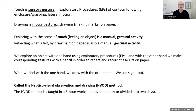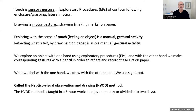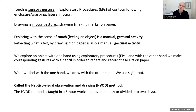In essence, touch is a sensory gesture using the exploratory procedures. Drawing is a motor gesture — making marks on paper. We explore with the sense of touch; we feel the object — a manual gestural activity. We reflect what is felt by drawing it on paper — also a manual gestural activity. We explore an object with one hand using exploratory procedures, and with the other hand, we make corresponding gestures with a pencil to reflect and record those exploratory procedures on paper.